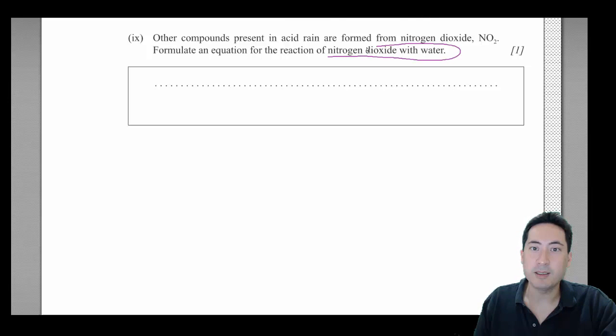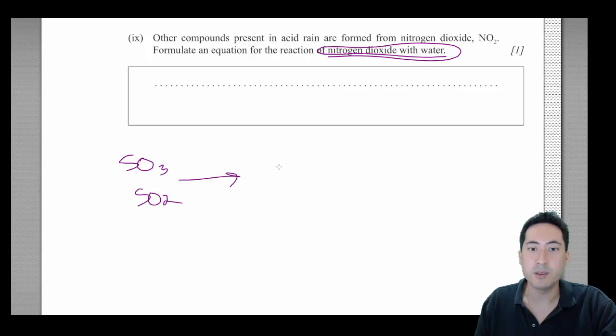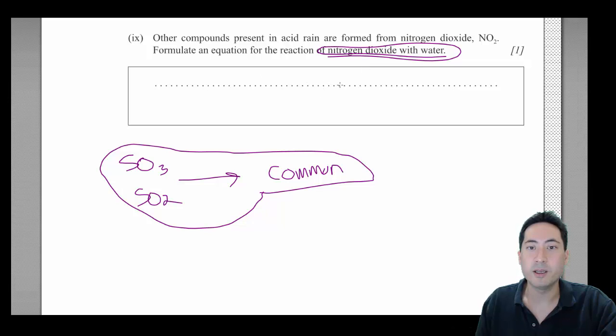Now this is probably the nastiest question you can get because for most compounds, for SO3 and SO2 and all sorts of other oxides, metal and non-metal oxides, you can pretty much guess the most common acid and base and work out what the equation is. But for this one here, this one's tricky because nitrogen dioxide forms radicals and forms both the nitric and the nitrous acid.